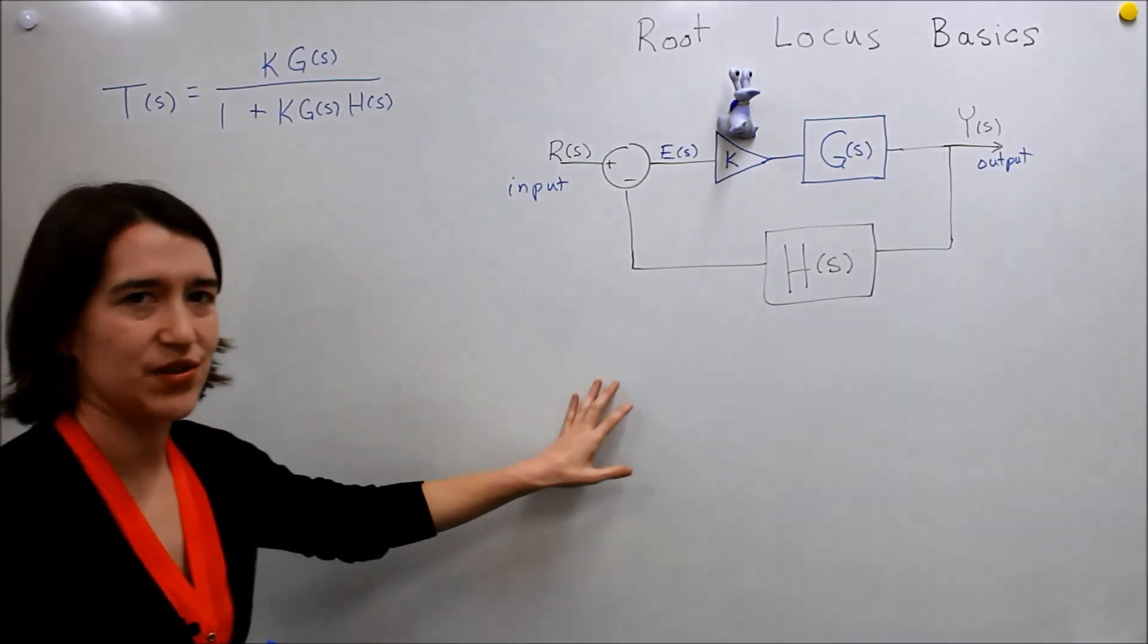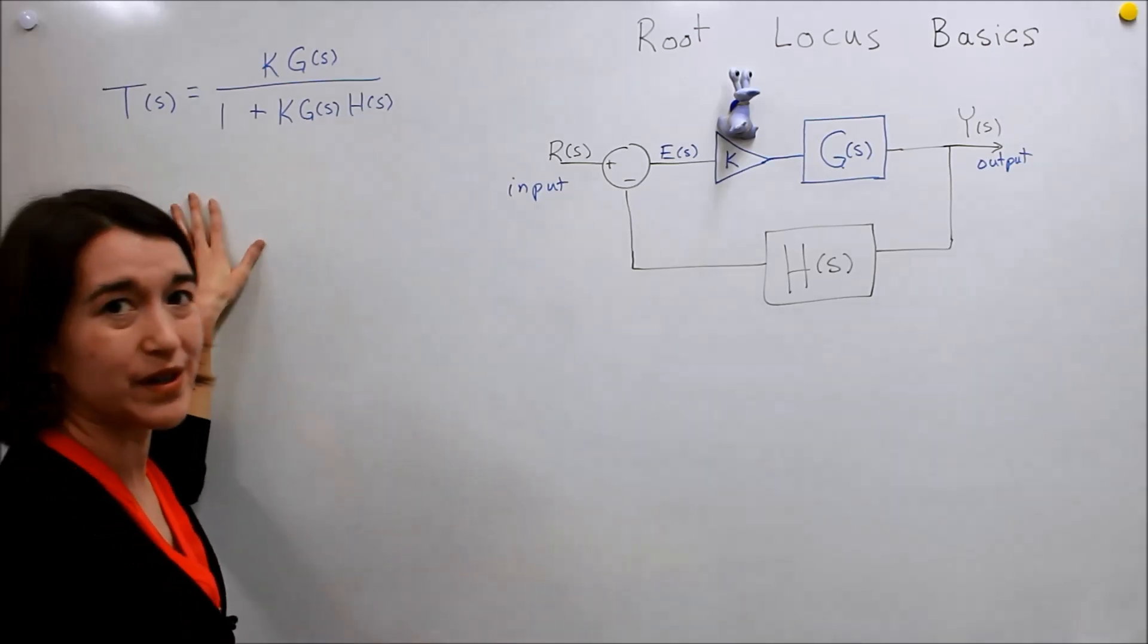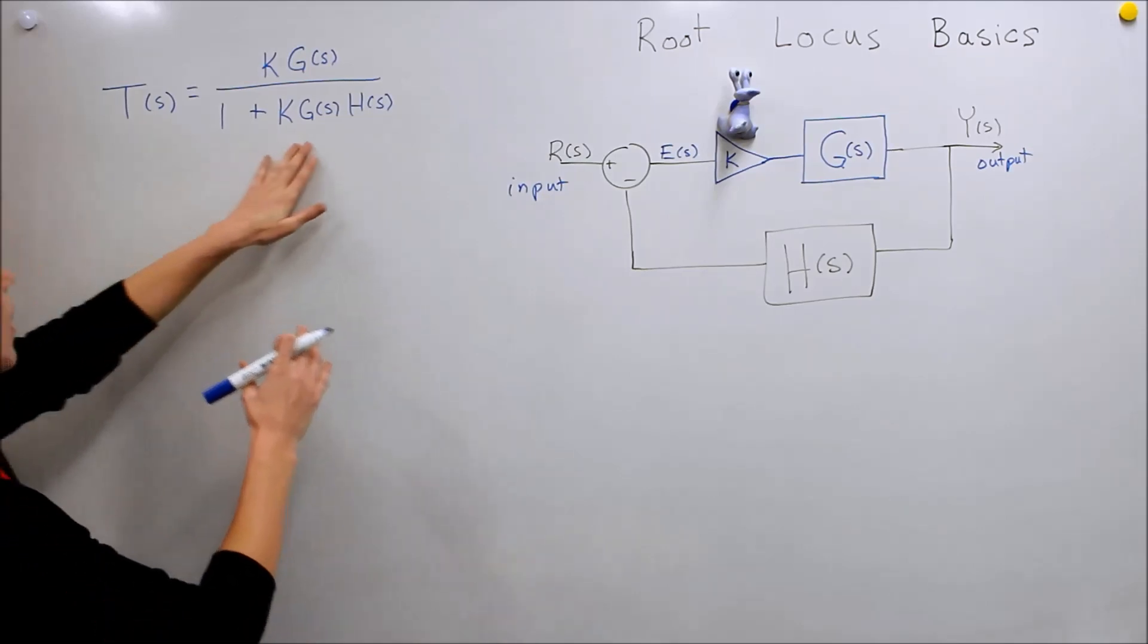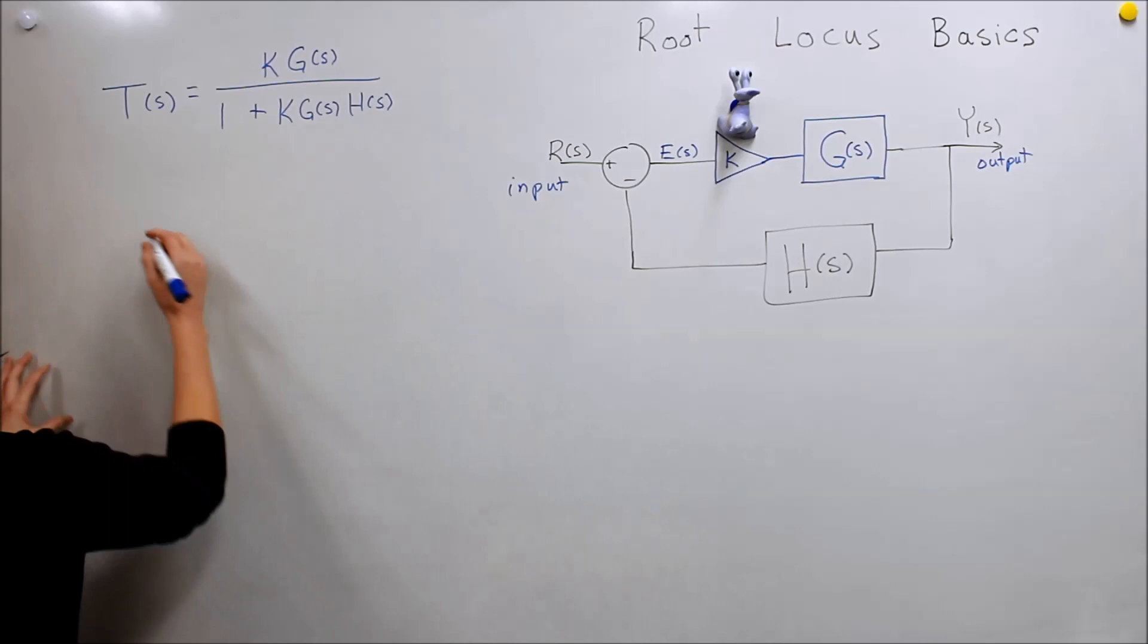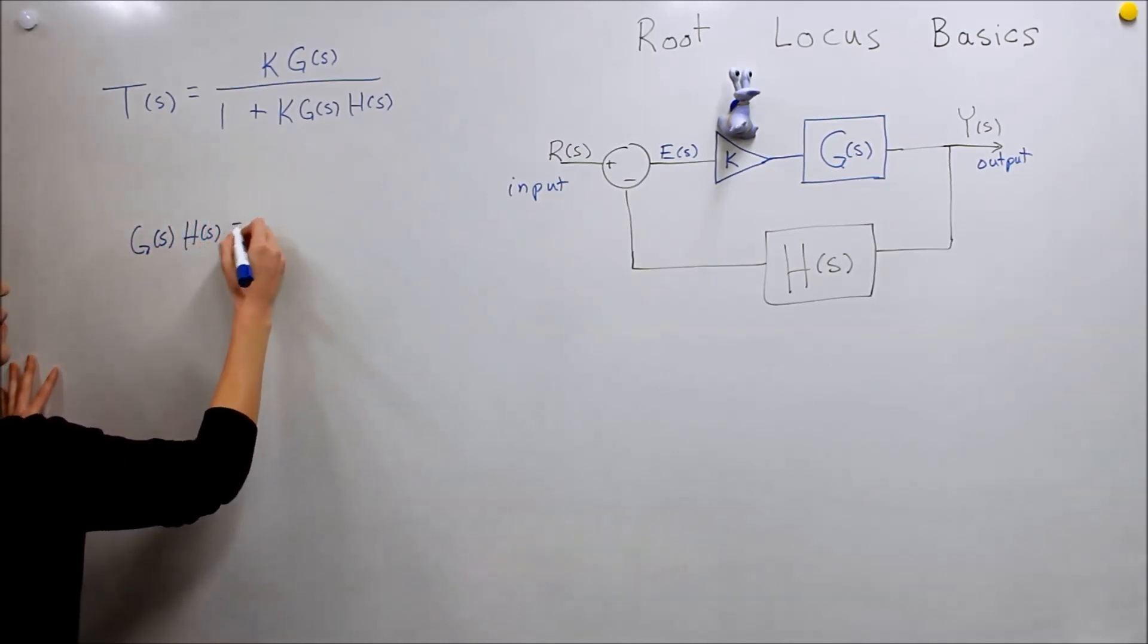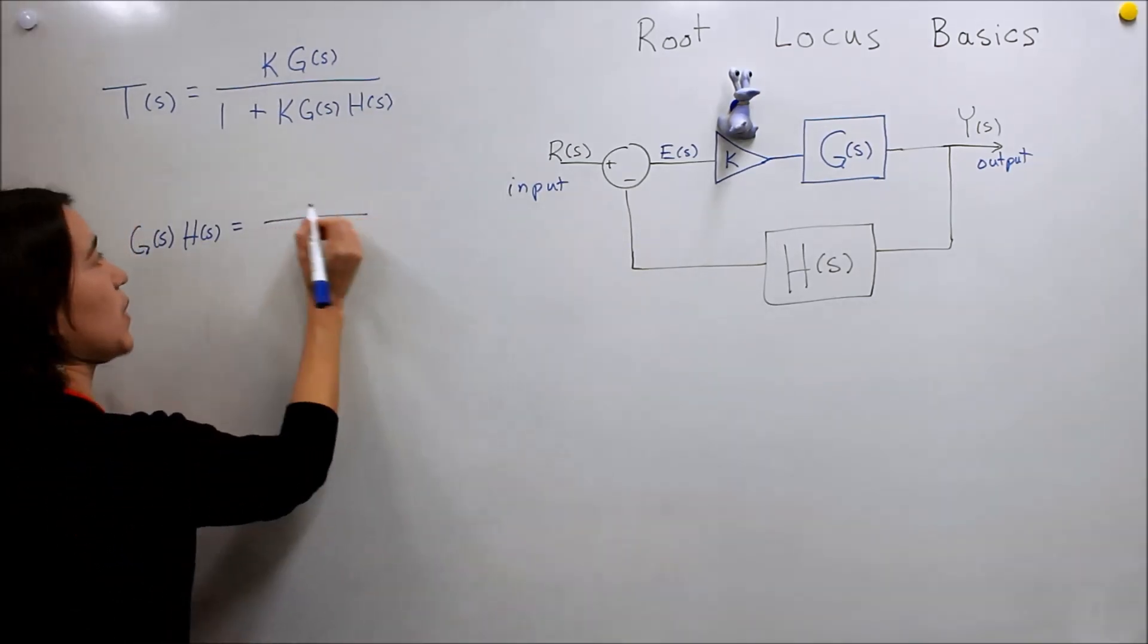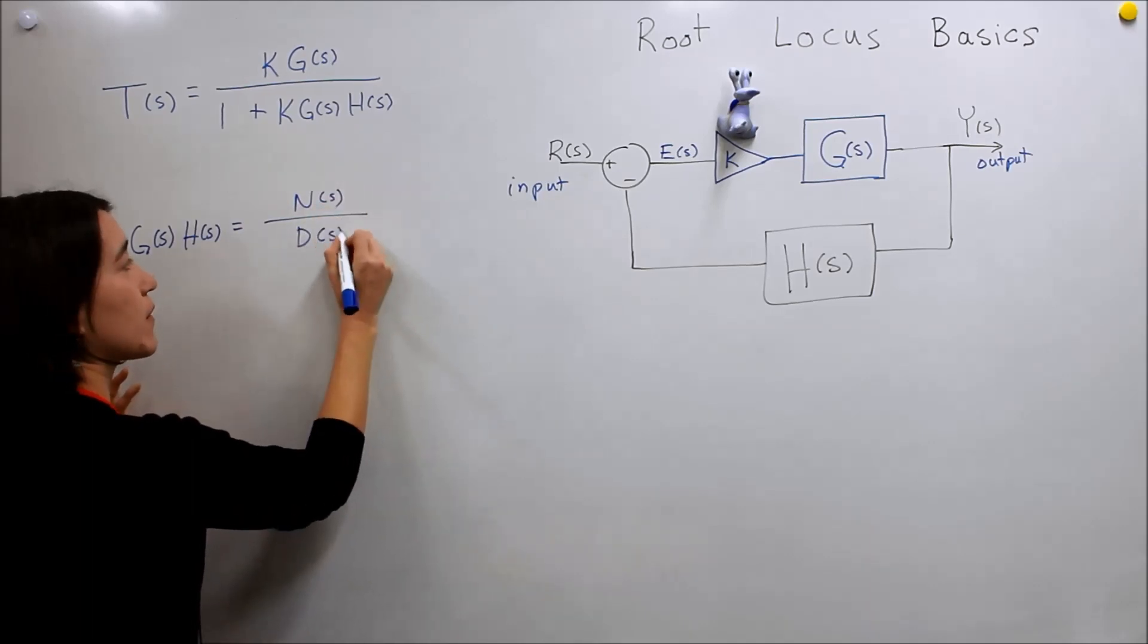Before we actually start drawing the root locus itself, we have to understand our pole equation here a little bit more. We're going to start with just an expression for G and H. If we say that G of H, we'll just lump them together, multiply them together, you get some expression. That expression will have some numerator as a function of S and some denominator as a function of S.